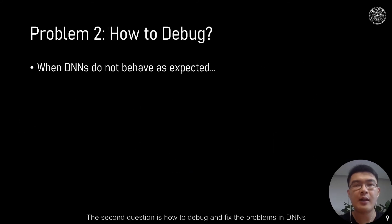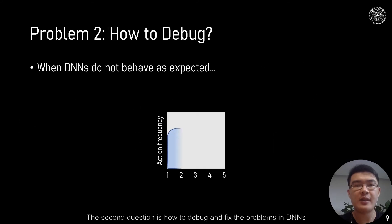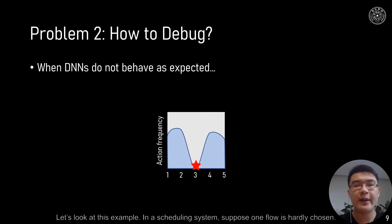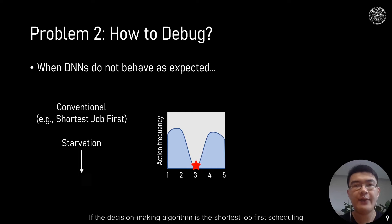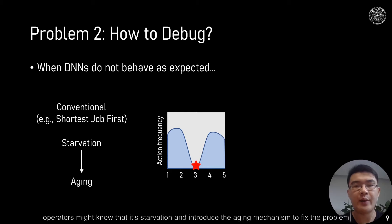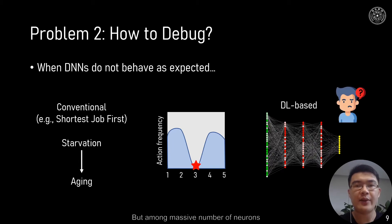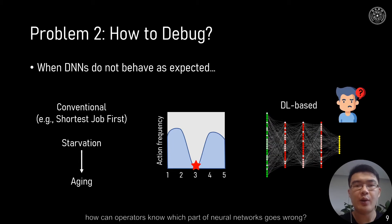The second question is how to debug and fix problems in DNNs. In a scheduling system, suppose one flow is hardly ever chosen. If the algorithm is shortest-job-first scheduling, operators might know it is starvation and introduce an aging mechanism to fix it. But among massive numbers of neurons, how can operators know which part of the neural network goes wrong?